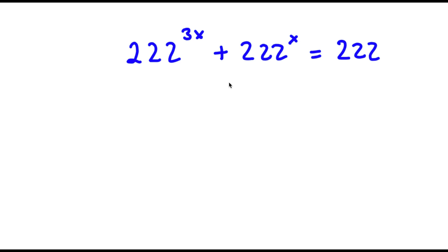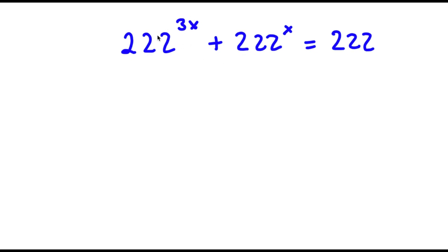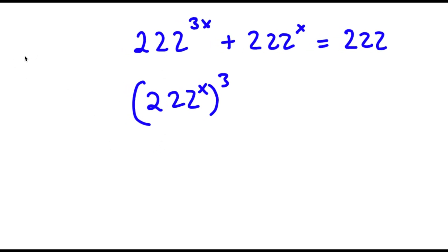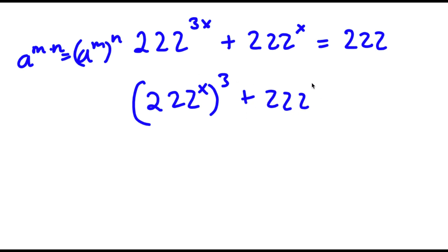In this problem, I have 222 to the power of 3x plus 222 to the power of x is equal to 222. To start, I'm going to rewrite 222 to the power of 3x as 222 to the power of x, to the power of 3, because if I have a to the power of m times n, this equals a to the power of m to the power of n. So now I have this plus 222 to the power of x is equal to 222.